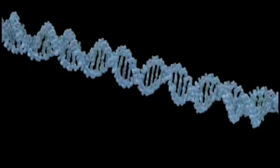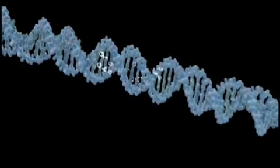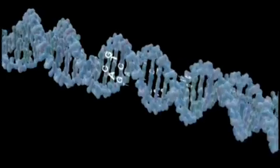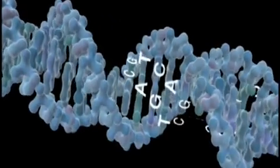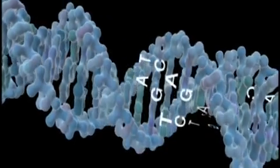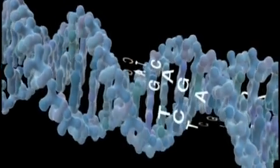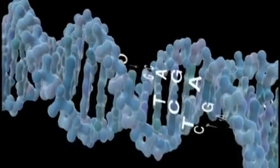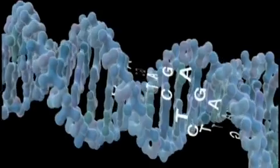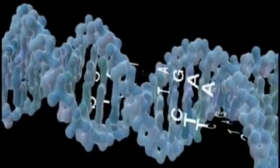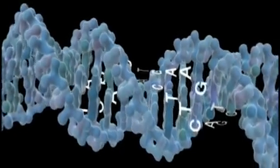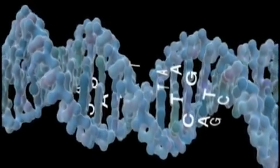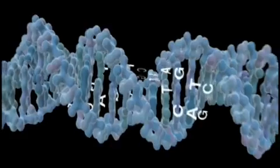In 1957, Francis Crick first proposed that chemicals called bases along the spine of the DNA molecule function as alphabetic characters in a written language or digital characters in a machine code. This animation shows how this digital information directs protein synthesis.